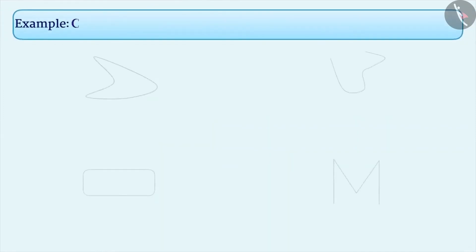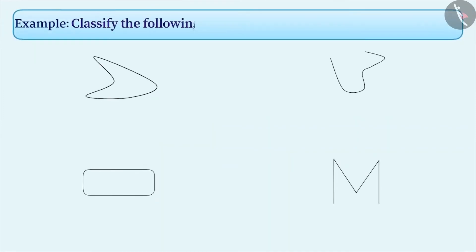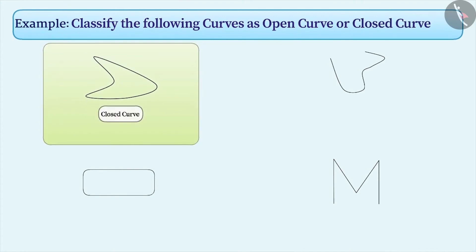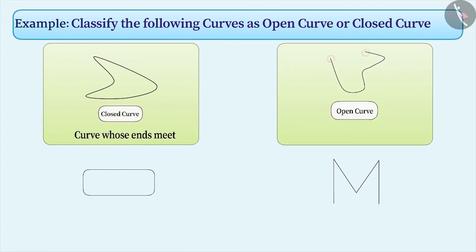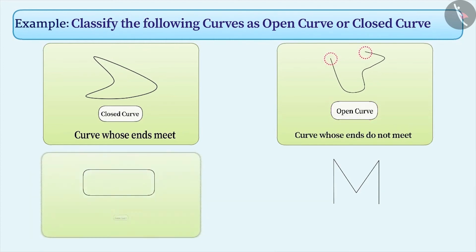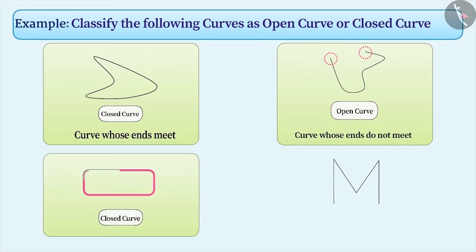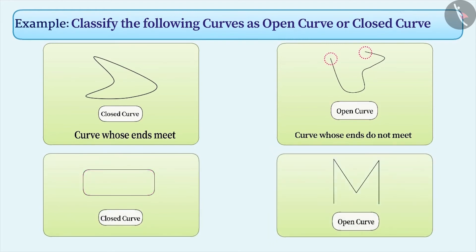Next example: classify the given curves into open curve and closed curve. The first figure indicates a closed curve because the ends of the curve are joined. This is an open curve because the ends are not joined. This is a closed curve because the ends are joined. This is an open curve because its ends are not joined.